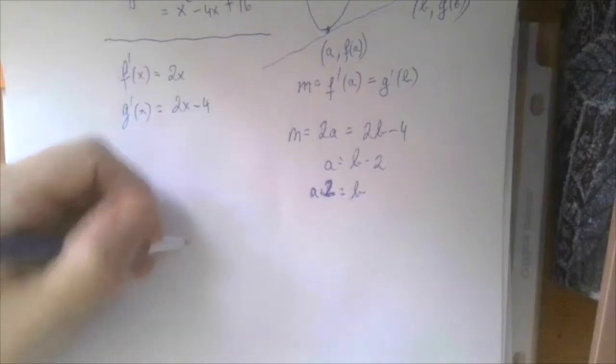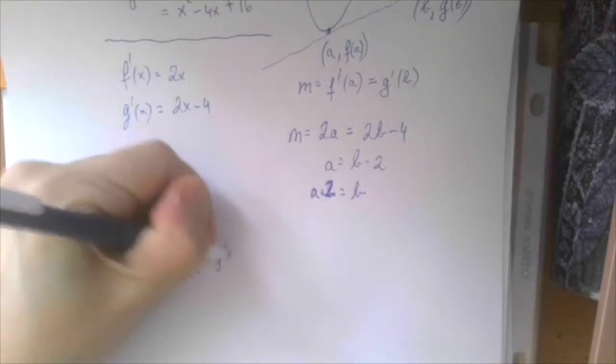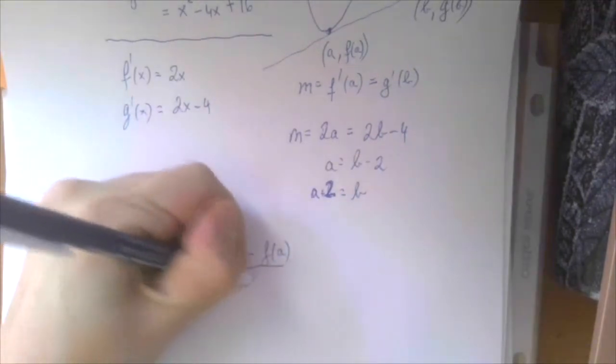So that same slope, which is 2a, should be the same as g of B minus f of A, the two y coordinates, divided by B minus A.